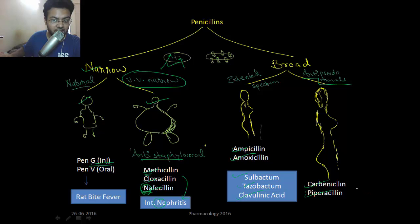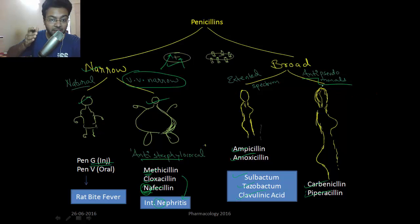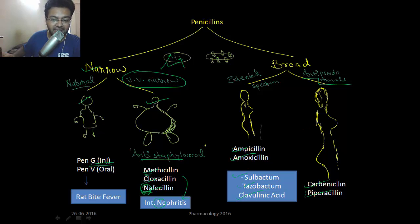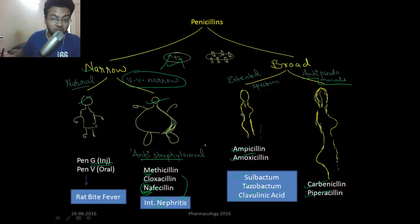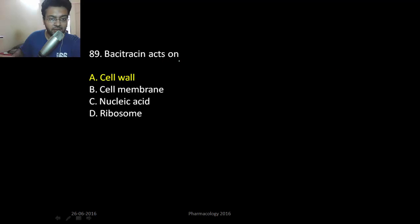The super extended or anti-pseudomonas penicillins can also kill Pseudomonas, which is a nightmare for surgeons. These include carbenicillin and piperacillin. However, these are also susceptible to beta-lactamase, so they need beta-lactamase inhibitors like sulbactam, tazobactam, and clavulanic acid for protection.